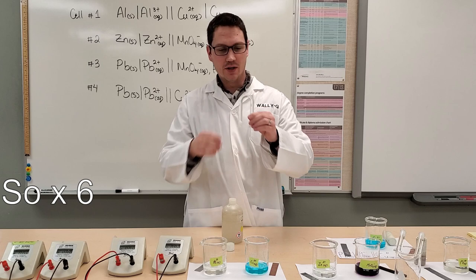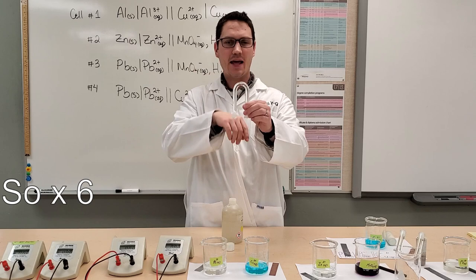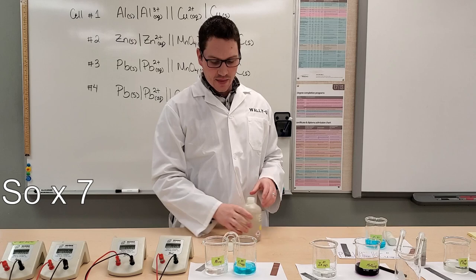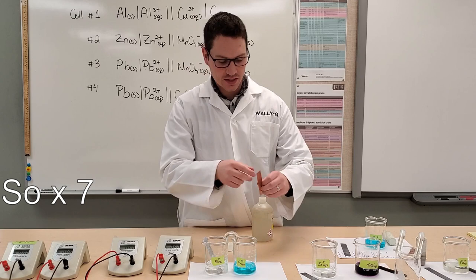So we need this salt bridge. There we go. We need this salt bridge to be able to allow the flow of cations and anions in whatever direction they're going to go. So we've got our salt bridge, and we connect our two half cells together.